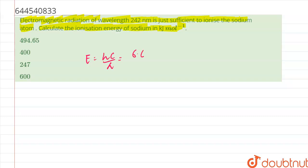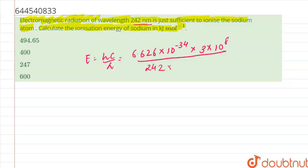H (Planck's constant) is given as 6.626 × 10⁻³⁴, C (speed of light) is 3 × 10⁸, and λ (lambda) is 242 nanometer, which is equal to 242 × 10⁻⁹ meter. On calculation we get E = 8.21 × 10⁻¹⁹ joule.